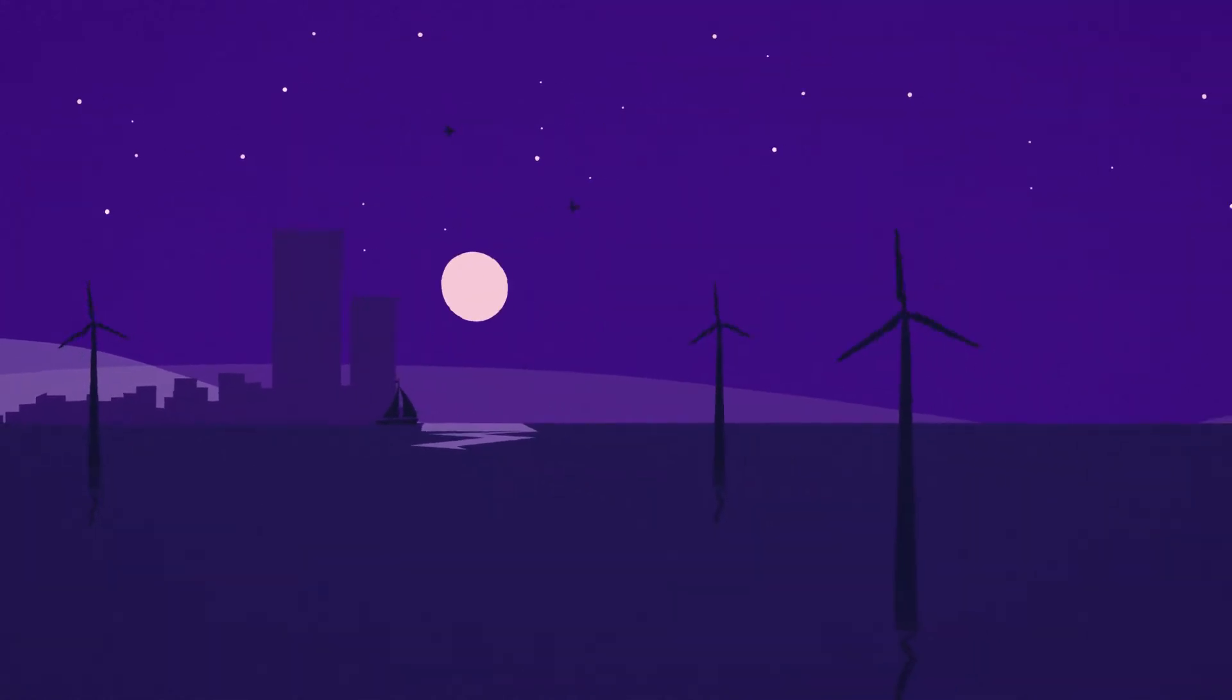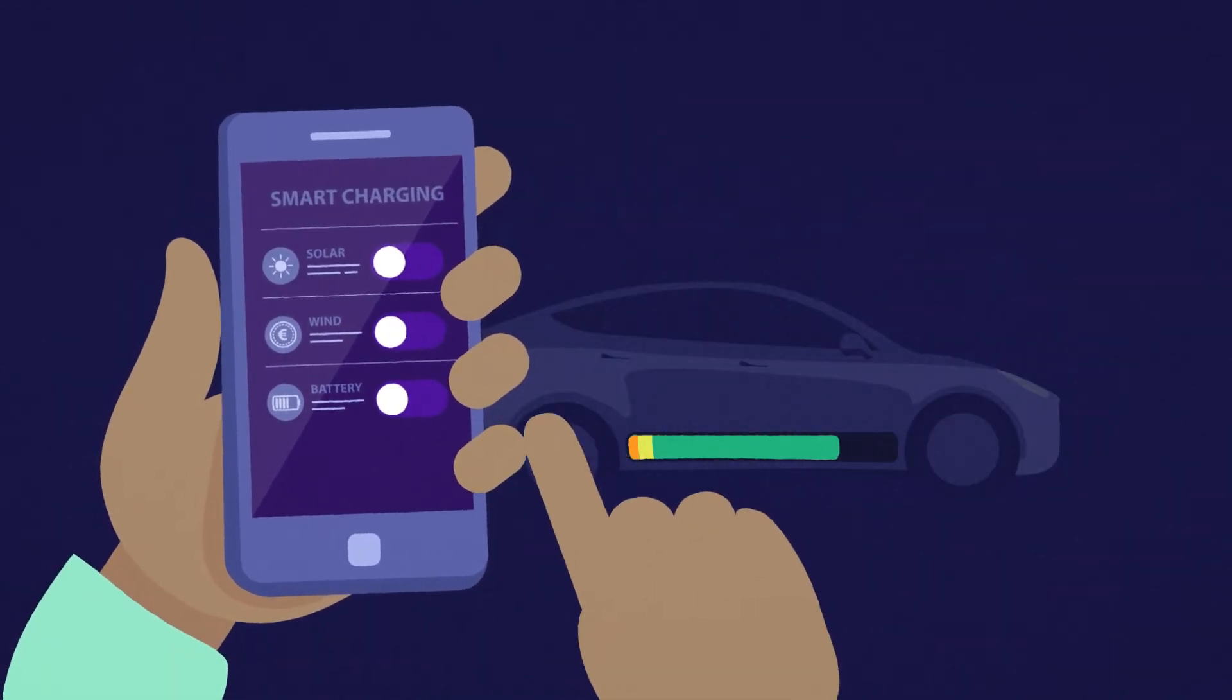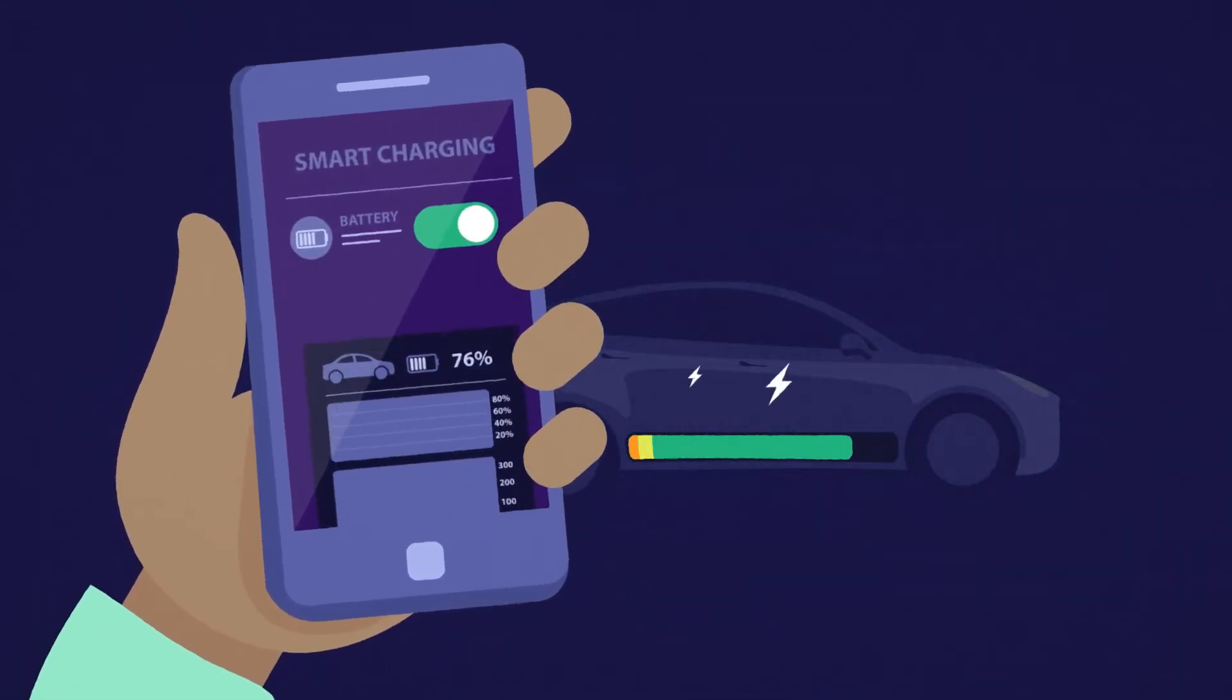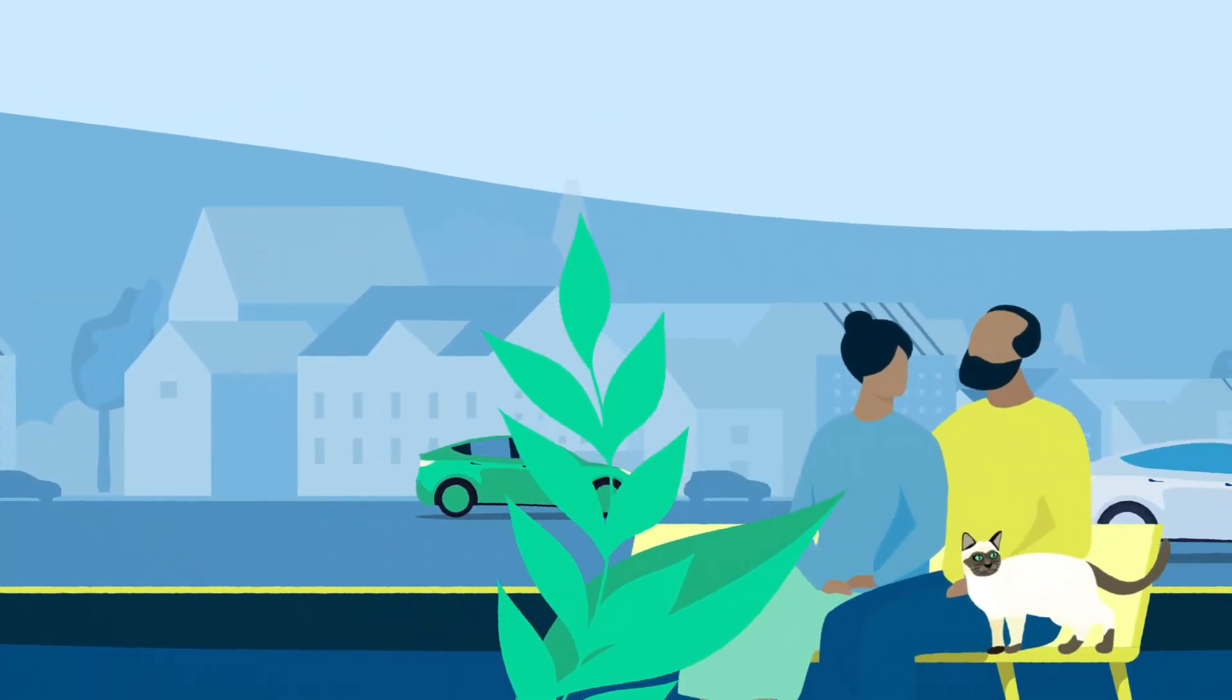You can also indicate that you want your batteries to be optimally managed. This way they last longer and you always have enough power. Moreover, smart charging is social charging.